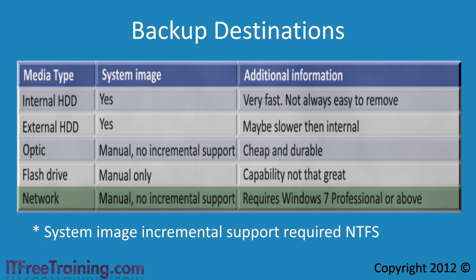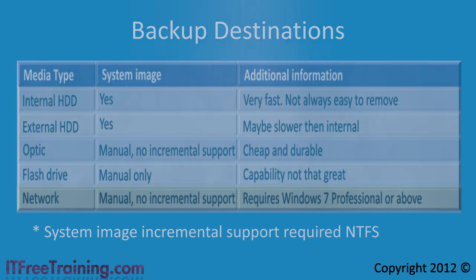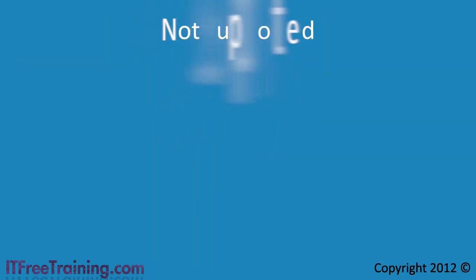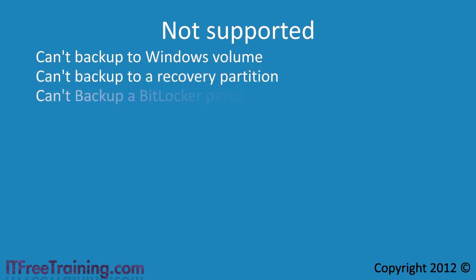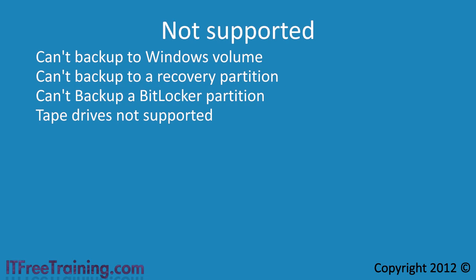With Windows Backup and Restore, there are some options which are not supported. First, you cannot backup Windows to the same volume as Windows. Also, you cannot backup to a recovery partition or a partition that has been encrypted with BitLocker. Lastly, Windows Backup and Restore does not support tape drives.